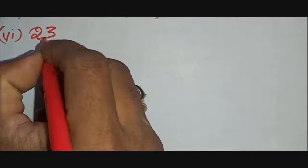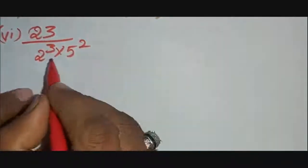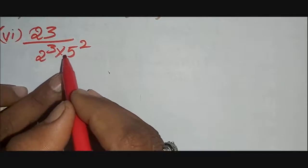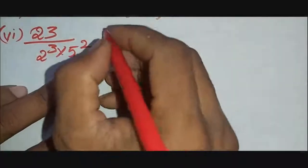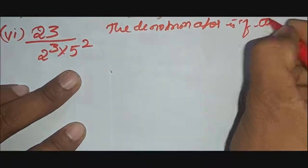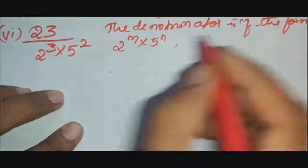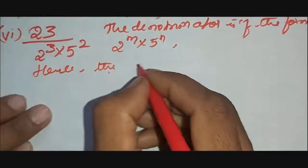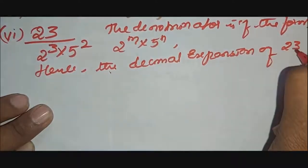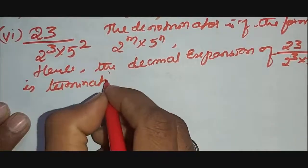Question 6: 23 divided by 2^3 × 5^2. The denominator is directly of the form 2^n × 5^m. Hence the decimal expansion of 23/(2^3 × 5^2) is terminating.